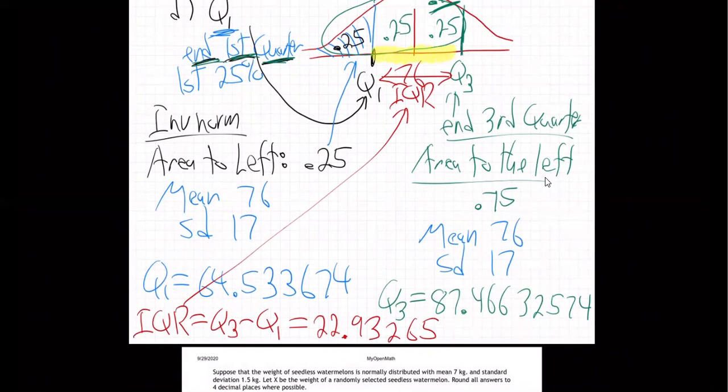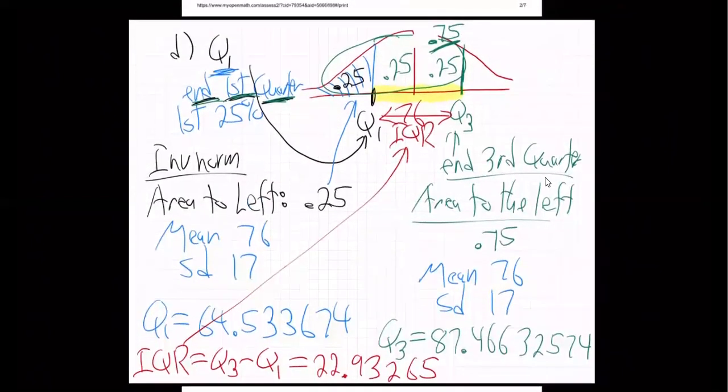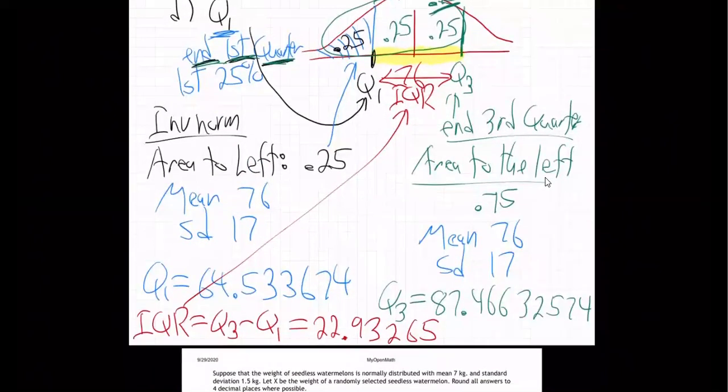Does that make sense? A student responds: on my question, I did exactly what you did, but both Q1 and Q3 came out to the same number, giving an IQR of zero. The instructor asks: did you use 0.25 for Q1 and 0.75 for Q3? The student confirms they did change the decimals but still got the same answers.